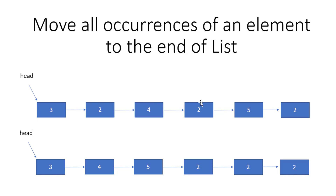So there are two cases: either the node value matches the element value, or it doesn't. If the value matches, move the node to the end and update the linking. If the value doesn't match, just update the previous and node pointers. We do this until our node reaches the tail node — that is our terminating condition.